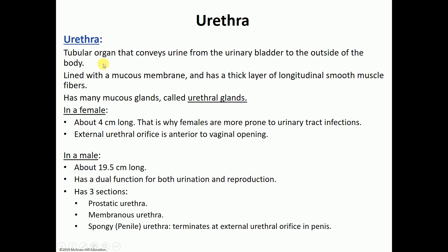The urethra is a tubular organ, but unlike the ureter, its function is to take urine from the urinary bladder to the outside of the body. It's lined with a mucous membrane, has longitudinal smooth muscle fibers, and contains urethral glands. The female urethra is shorter — about 4 centimeters long — which is why females have a higher tendency to develop UTIs. The external urethral orifice is anterior to the vaginal opening.